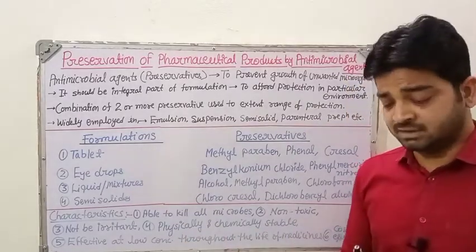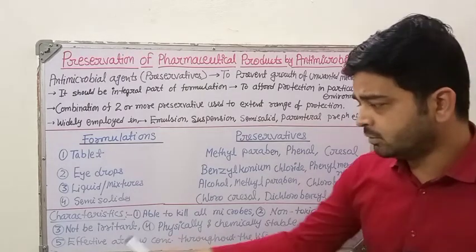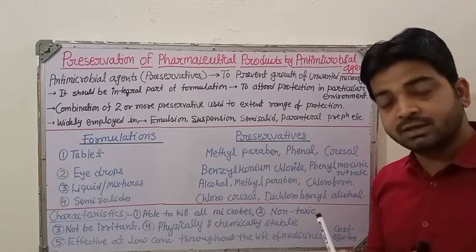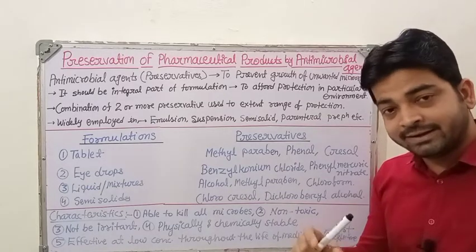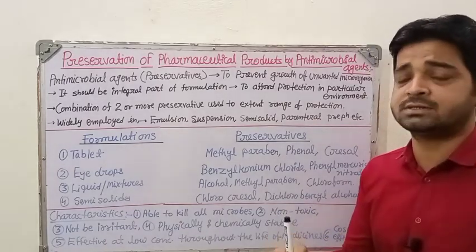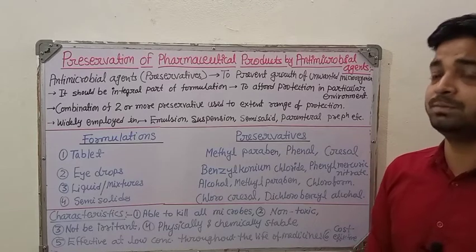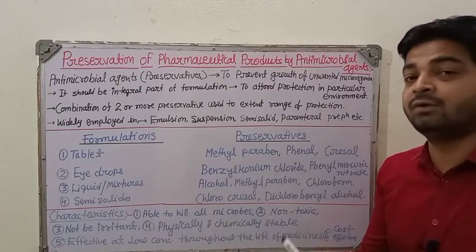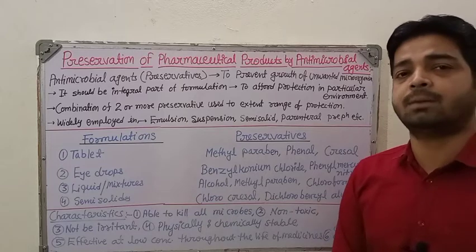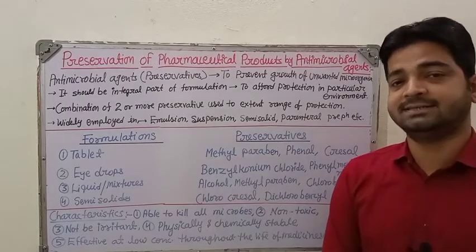The preservative should be physically and chemically stable during storage, with no changes across different pH environments. It should be effective at low concentration throughout the life of the medicine — whether the expiry is two, three, or five years, it must remain effective at the lowest concentration added during manufacturing. Finally, it should be cost-effective. These are the key characteristics of antimicrobial preservatives used in pharmaceutical products.